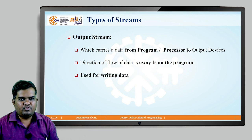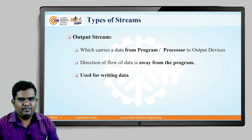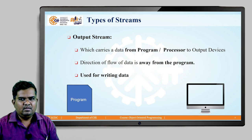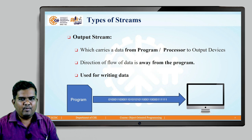Similarly, the output stream carries data from the program or processor to the output devices. The direction of flow of data is away from the program, towards the output devices. Since it has the direction towards the output devices, it is used for writing of data. For example, if we have a program and an output device like a monitor, and we want to print data on the monitor, we establish an output stream. The direction of the stream is from the program towards the monitor, writing the data on the monitor.